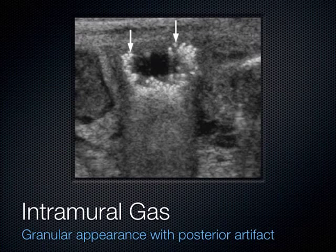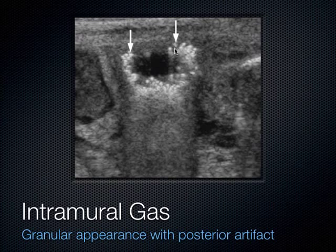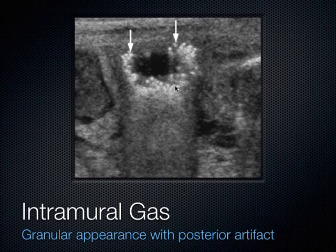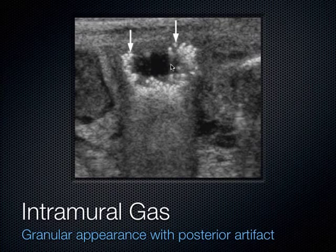This is what it looks like when you have air in the wall of the bowel — a very sick bowel. This is what it looks like with necrotizing enterocolitis: you get intramural air that looks like little punctate areas. Sometimes we can see comet tails — a reverberation artifact that goes toward the bottom of the screen. You see that with air and sometimes metal, but air classically causes these comet tails.